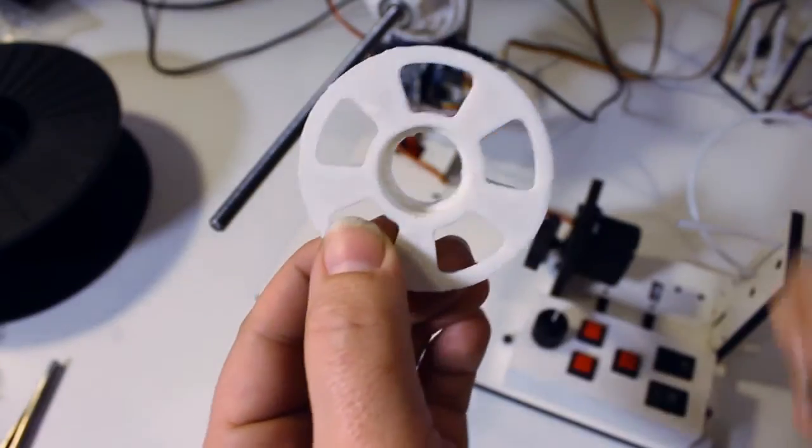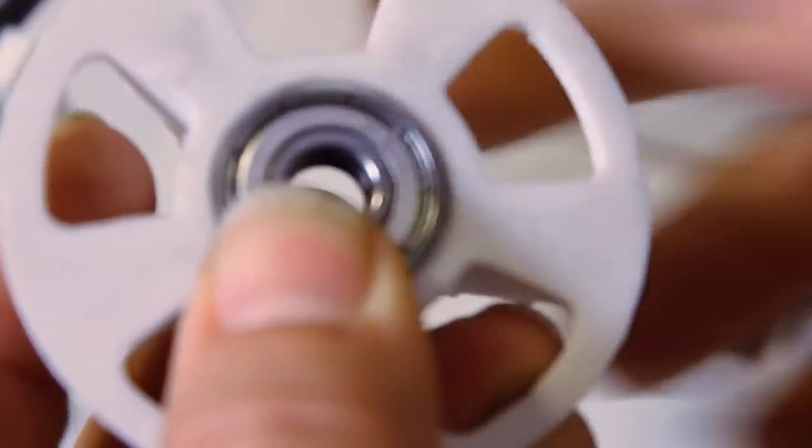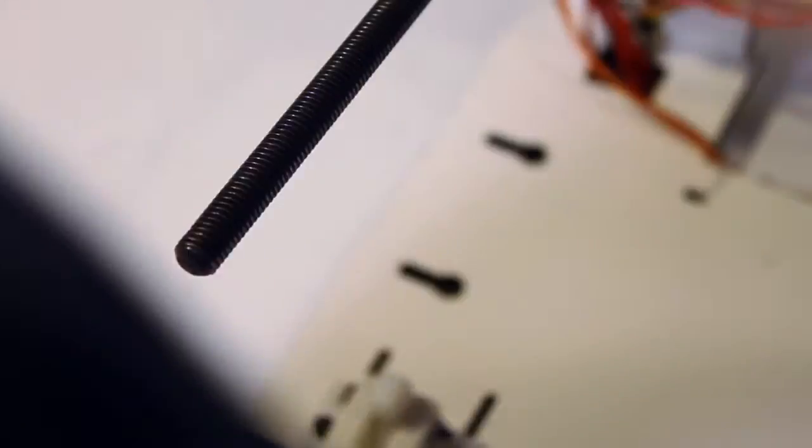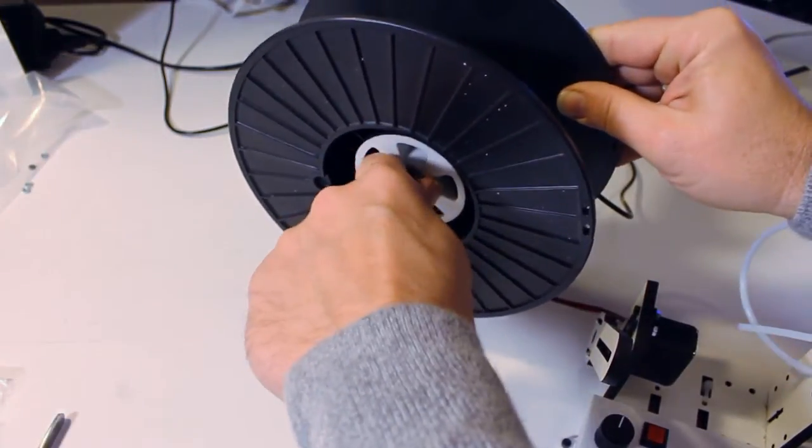Take the printed spool hub and press the last bearing into the flat side. Pull the spool support down and slide the spool on. Slide the spool hub on after it. Push the spool up against the gear.